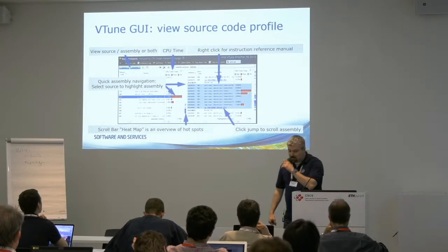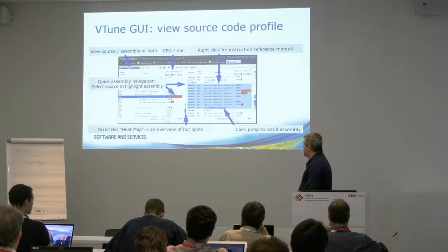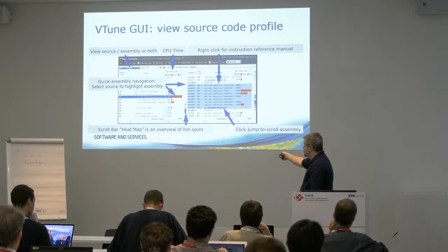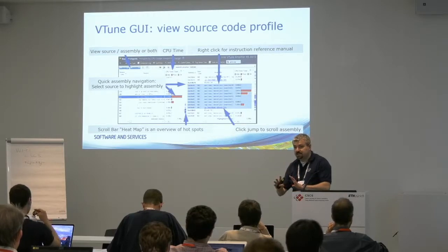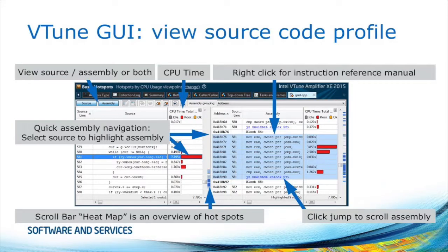Of course there's the source code view. If you click on one of those hotspots, VTune takes you to a source code view that breaks the performance data down for each of your lines in your source code but also for the assembly code. Now this is all statistics, so it doesn't necessarily mean that this instruction took really 3.8 seconds and the next one only 2.5 seconds. There's a statistical fuzziness in this performance data, but at least it's a lot more detailed than something like wall clock time. Take it with a grain of salt — it's not highly accurate but it's accurate enough so that you can limit the scope of your performance problem to actually fix it.